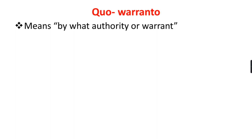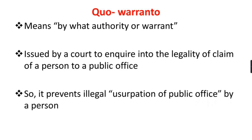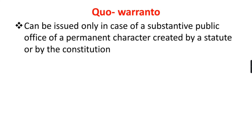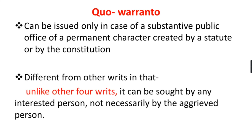Quo Warranto means 'by what authority or warrant.' It is issued by a court to inquire into the legality of a person's claim to a public office, preventing illegal usurpation of public office. It can be issued only in the case of a substantive public office of a permanent character created by a statute or by the constitution. Unlike the other four writs, Quo Warranto can be issued by any interested person — not necessarily by the aggrieved person.